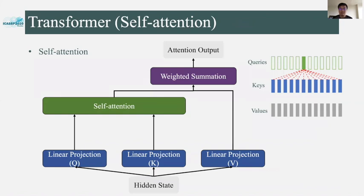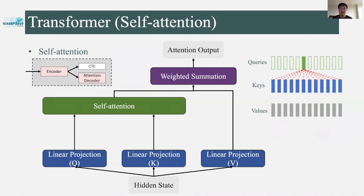Transformer achieves a lot of success. One major reason is that it can capture information from the whole sequence due to the multi-headed self-attention layer. The input hidden state sequence is projected to three different hidden state sequences called queries, keys, and values. Self-attention computes the weights based on the similarity between each query state and every key state, which are applied to value state sequences to generate the output. This self-attention layer is applied in both the encoder and the decoder of the speech recognition model.